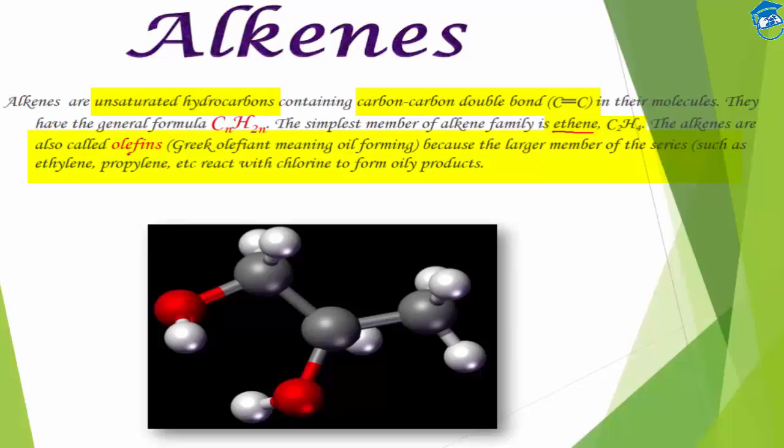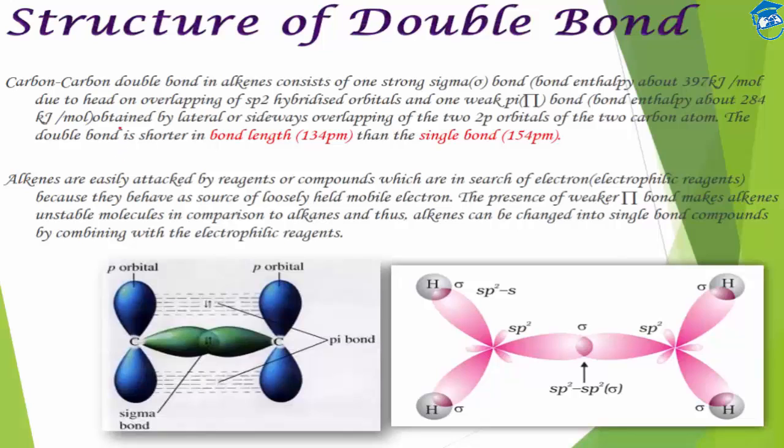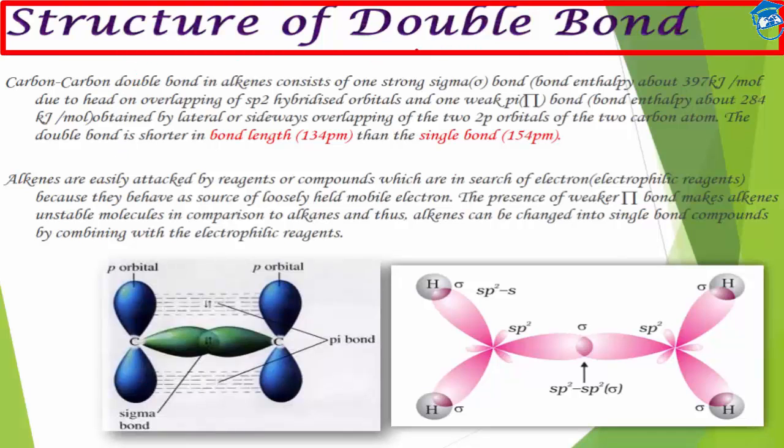Alkenes are also called olefins. This is derived from the Greek word olefant, which means oil-forming, because the larger members of the alkene series react with chlorine to form oily products. That's why they are known as olefins.